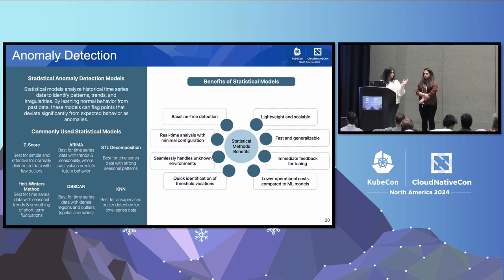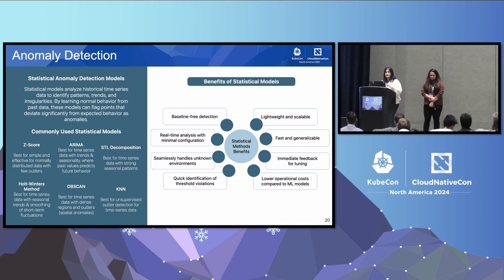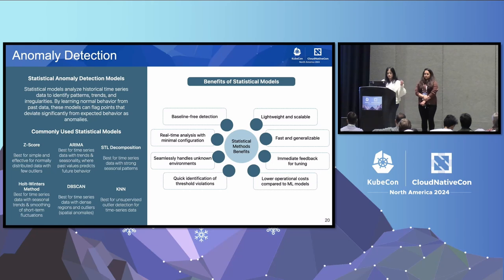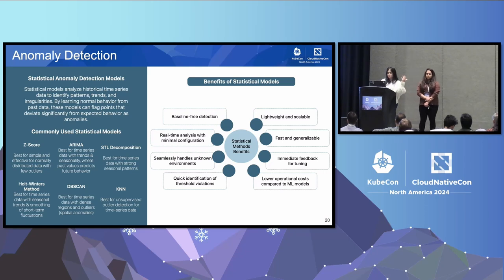Let's zoom in on the anomaly detection and modeling layer. There are multiple statistical models we can use: Z-score, ARIMA, STL decomposition. Z-score is good because of its versatility. For data smoothing, you can use Holt-Winters, which is also available out of the box with Prometheus. These models are lightweight, scalable, and offer training-free anomaly detection — you don't need pre-training data. They perform real-time analysis with minimal setup, are fast, generalize well across data types, and have less operational cost compared to full ML pipelines.